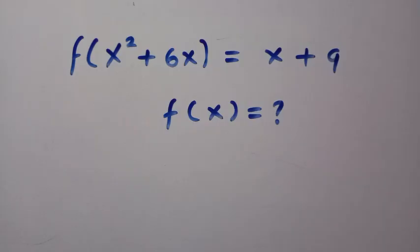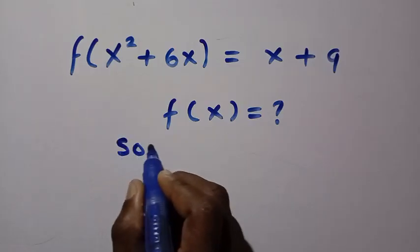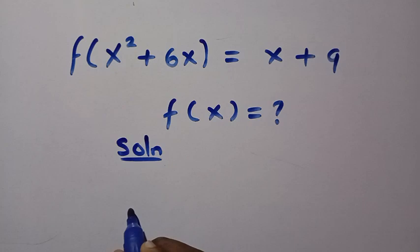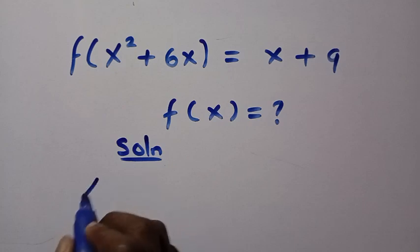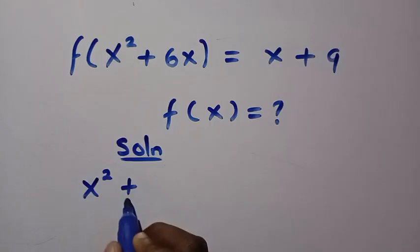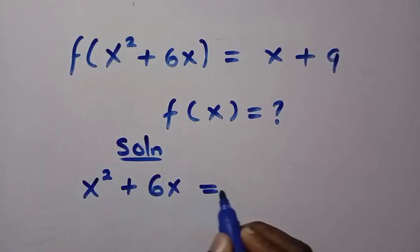To solve this, I'm going to apply two different approaches and see which one is more effective. Let's consider the solution. Suppose I let x² + 6x = t.